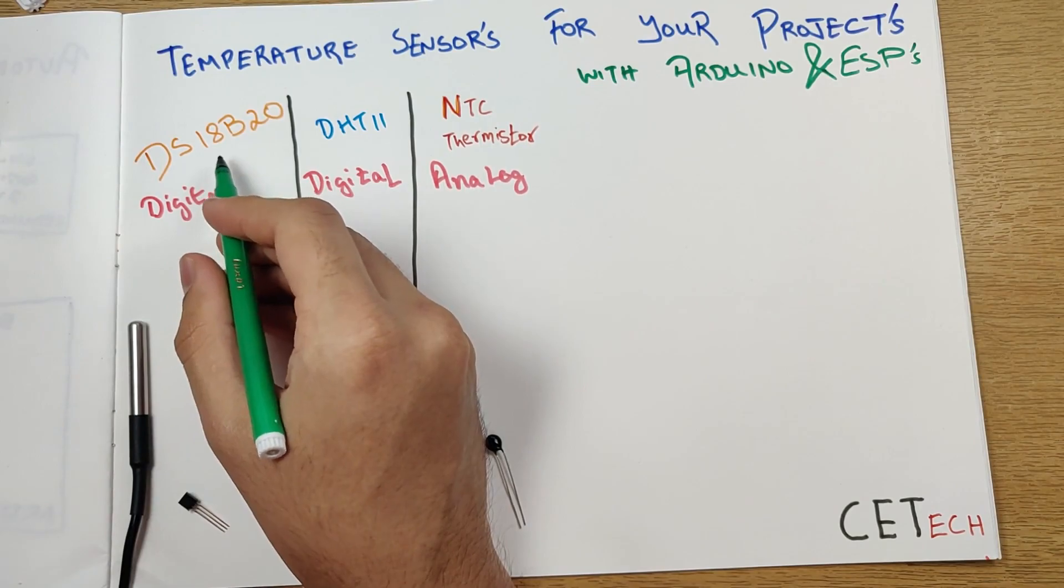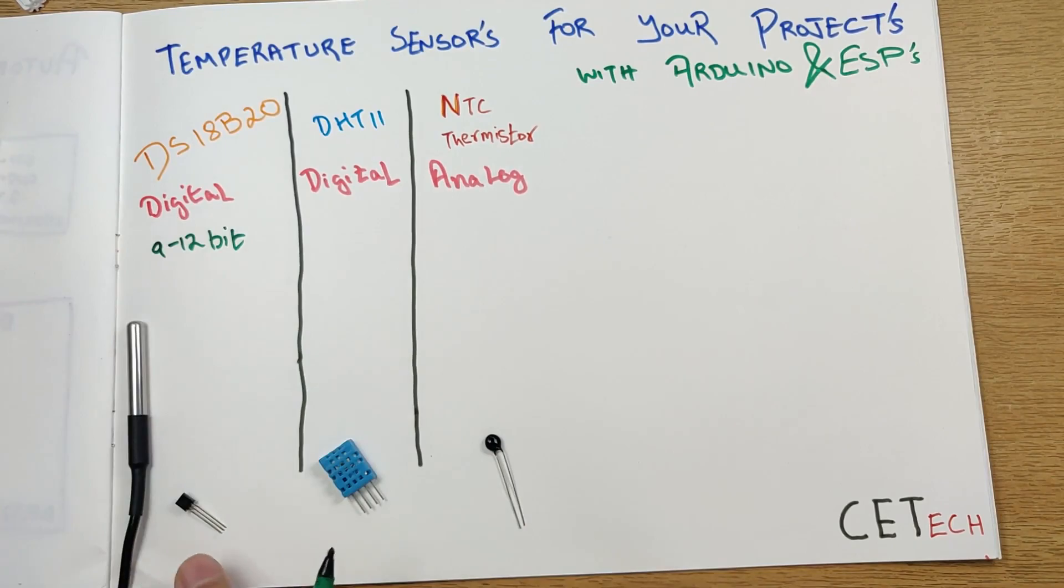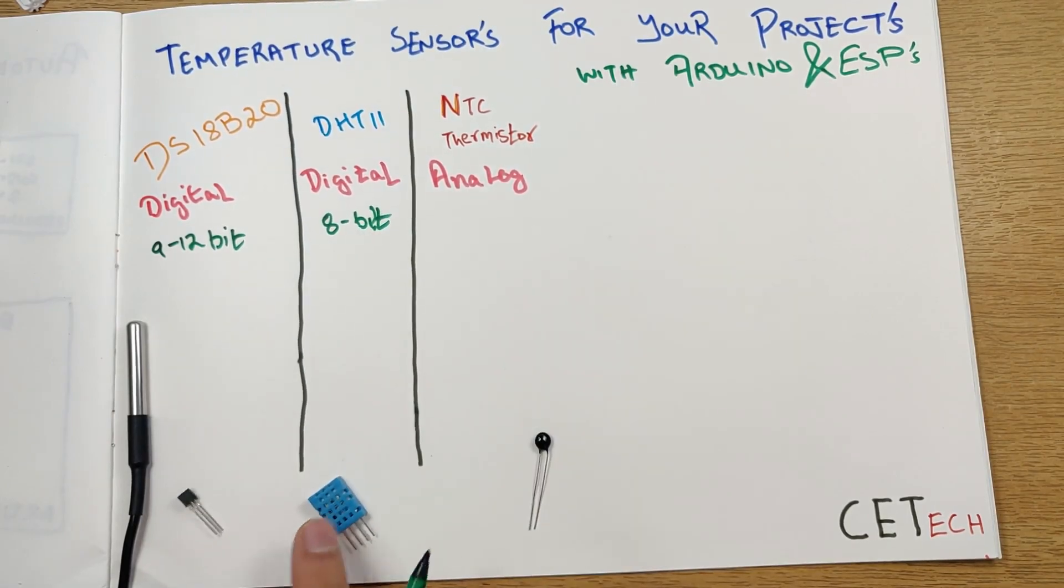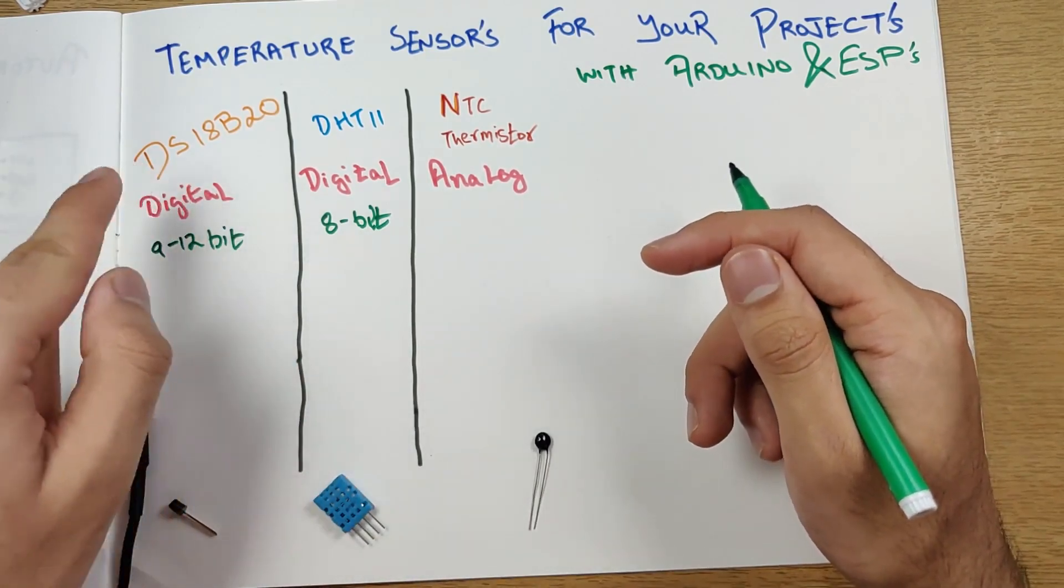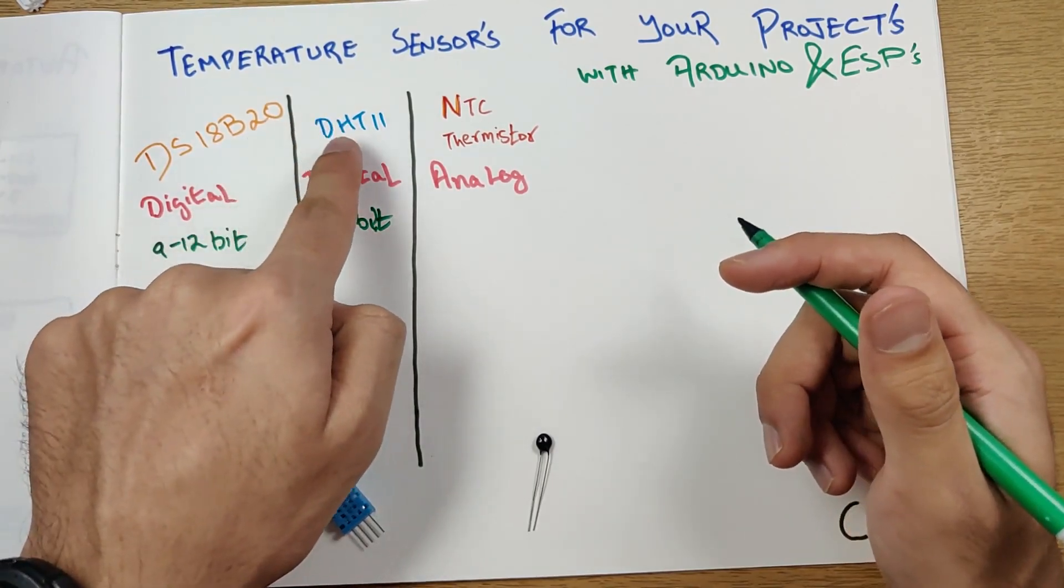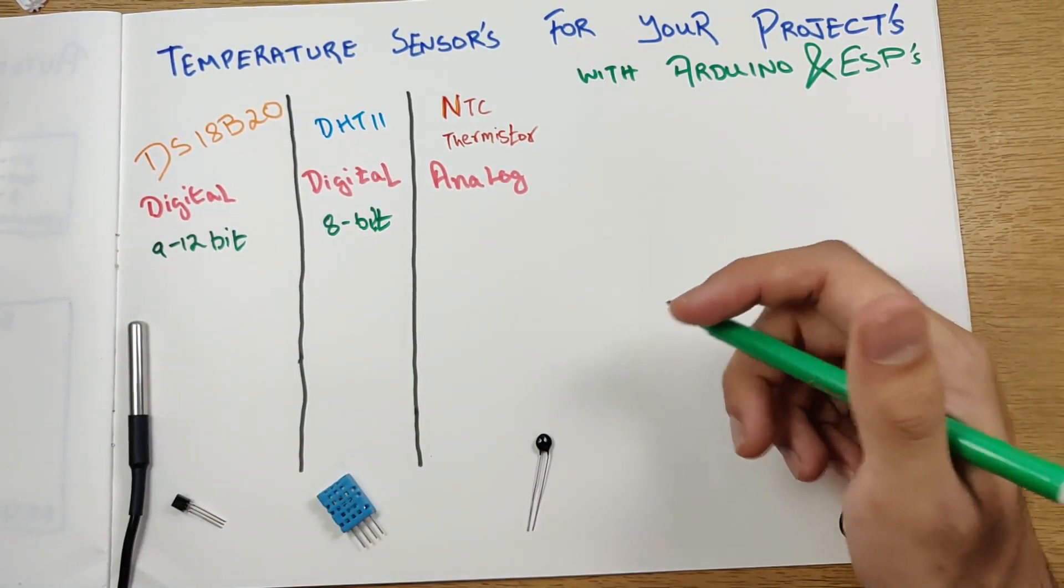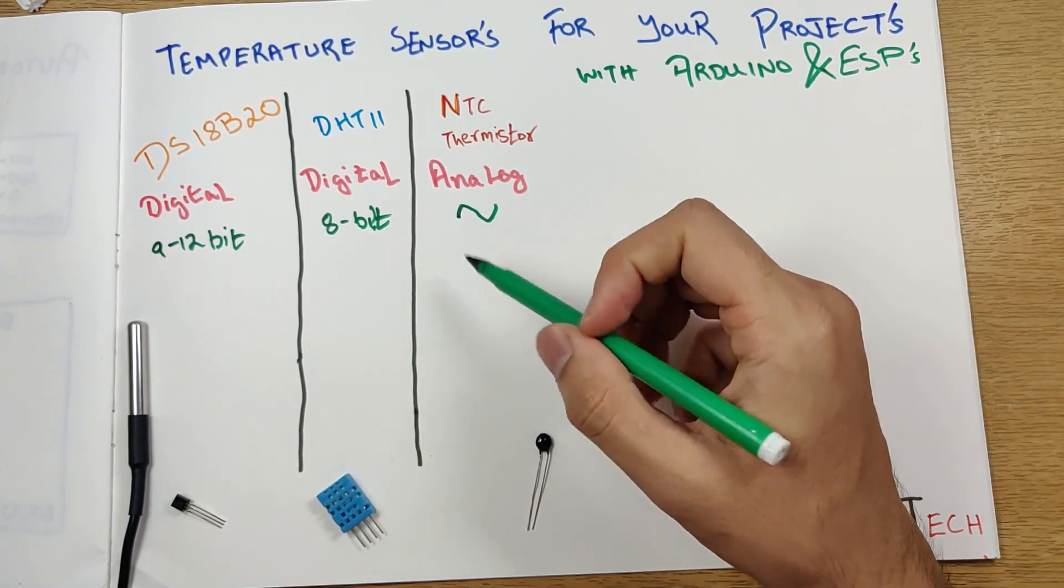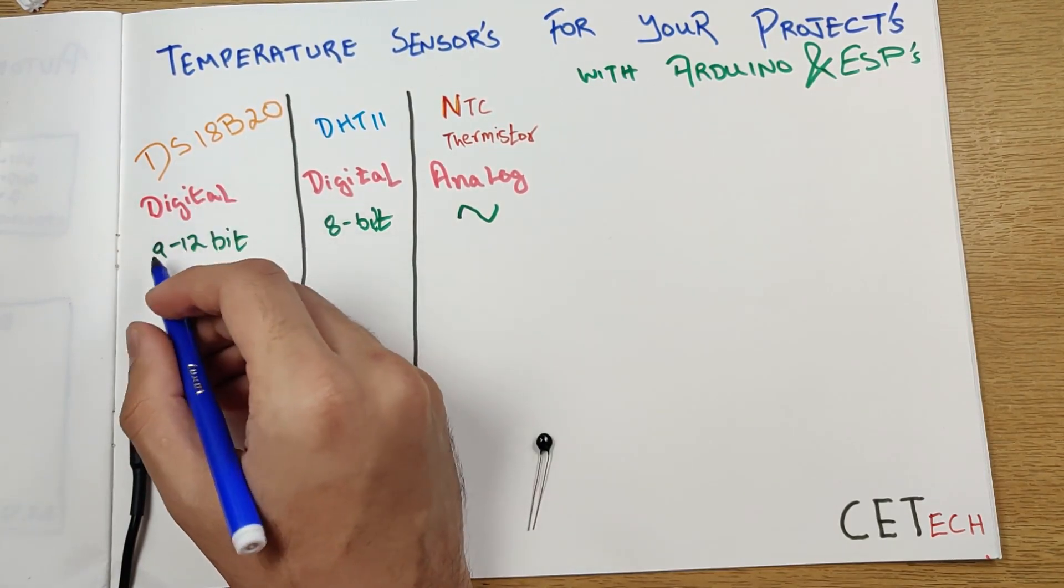Moving on, as we said that these two are digital, the DS18B20 spits out around 9 to 12 bit of digital data which contains the temperature, while the DHT11 spits out an 8-bit data which consists of the temperature and the humidity. So yes, there's a difference over there that the DS18B20 only calculates the temperature, while the DHT11 does temperature and humidity both. So there the DHT11 gets 1-2 itself. And the NTC thermistor being analog, we can say that it does output analog data and no data in bits.